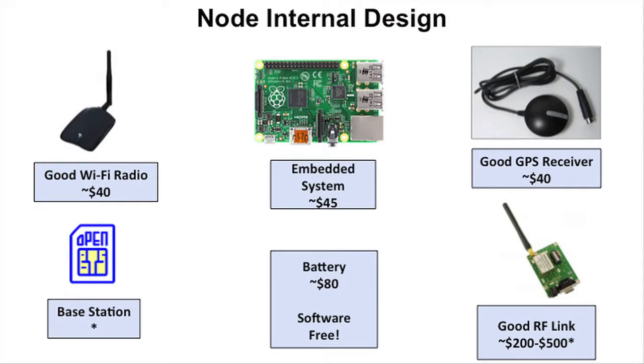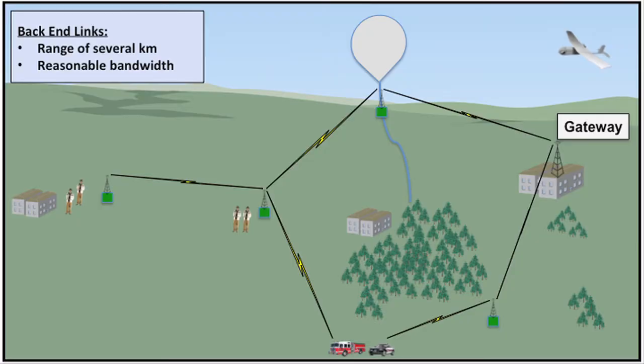Internally, our nodes are made up of relatively inexpensive hobbyist hardware. The idea was to keep it very modular and flexible so that anybody can build their own, plug in other components, and add functionality wherever they see fit. Over our back-end links, our nodes will talk over at least several kilometers with reasonable bandwidth, so we can sync all of our data across the network in a reasonable time frame.